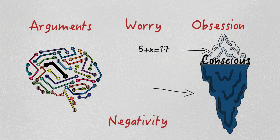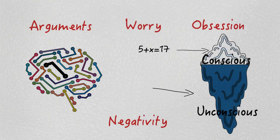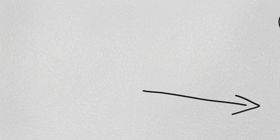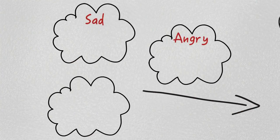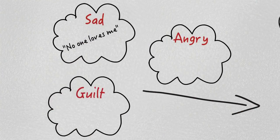The larger part of the iceberg is all of our unconscious thoughts and feelings, which cause most of our behavior, like reacting to arguments in the same way again and again, even if afterwards we know it was wrong.